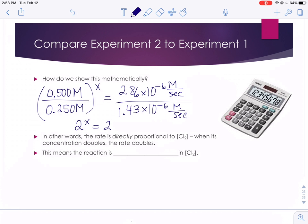So if we have to solve for x, 2 to what power equals 2? Well, x is going to equal 1. In other words, the rate's directly proportional to the chlorine concentration. When the concentration doubles, the rate doubles. So that would mean that it's first order in chlorine, or first order with respect to chlorine.